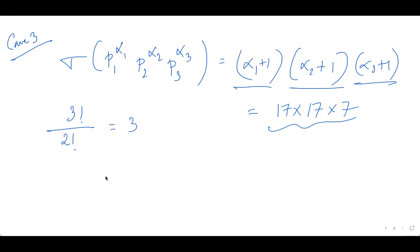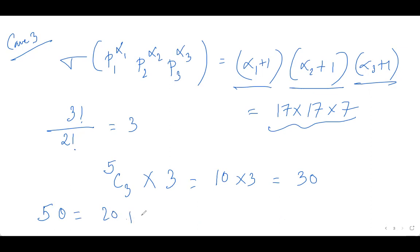So from Case 3, the total non-perfect-cube numbers are 5C3 × 3 = 10 × 3 = 30. Adding Case 2 and Case 3: 20 + 30 = 50. That is the maximum number of non-perfect-cube numbers I can form under the given conditions. Since we must have 51 distinct such numbers, I cannot have all of them be non-perfect-cubes — at most 50 can be. Therefore, at least one of the 51 numbers must be a perfect cube.